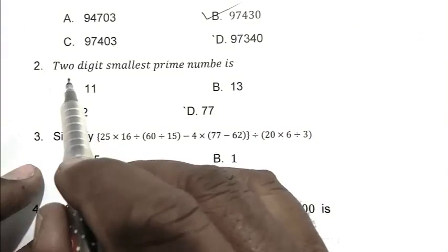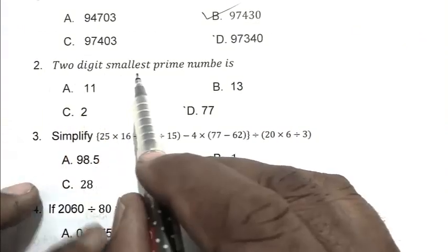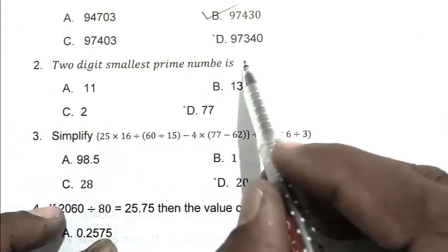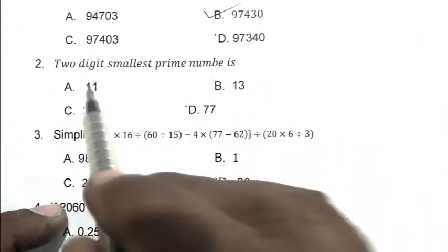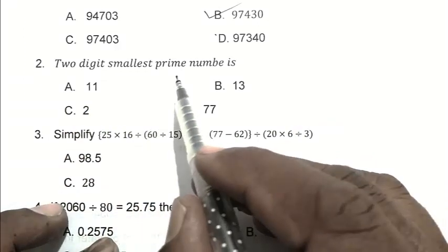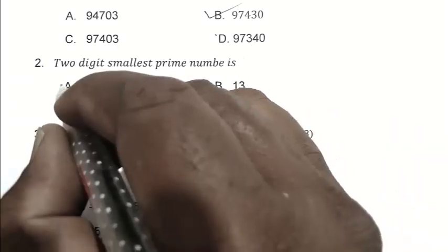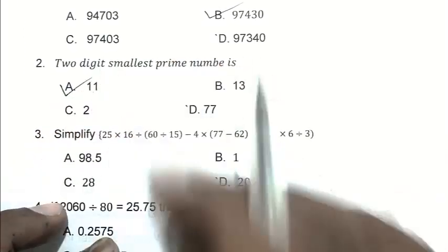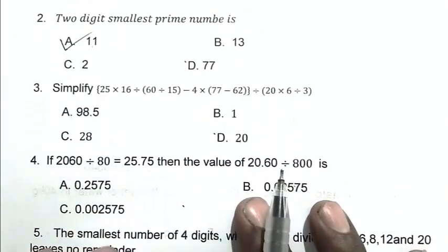Question number 2. The 2-digit smallest prime number is. We know the 2-digit smallest prime number is 11. So A is the right answer.